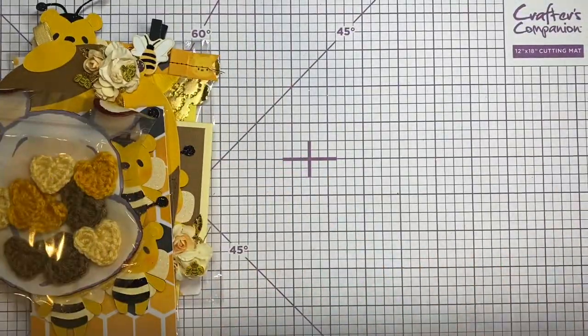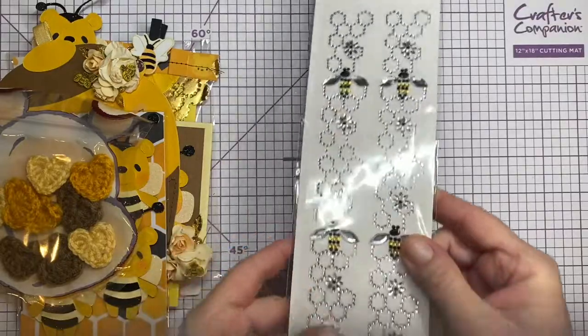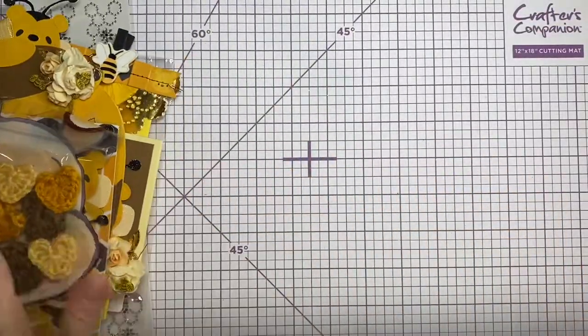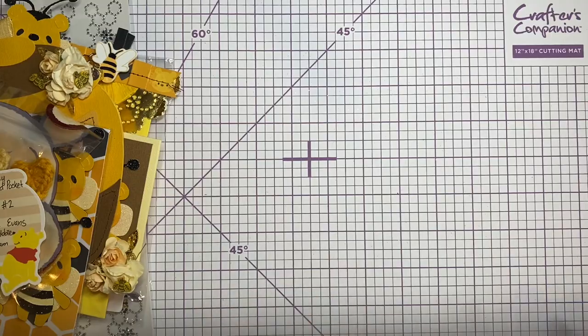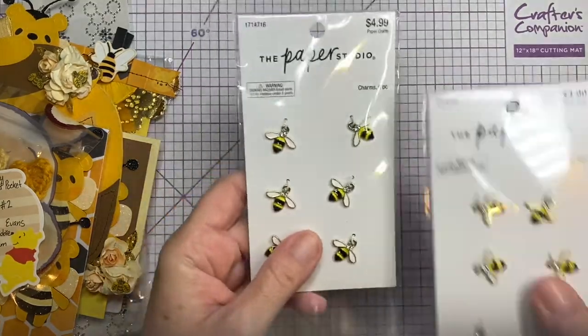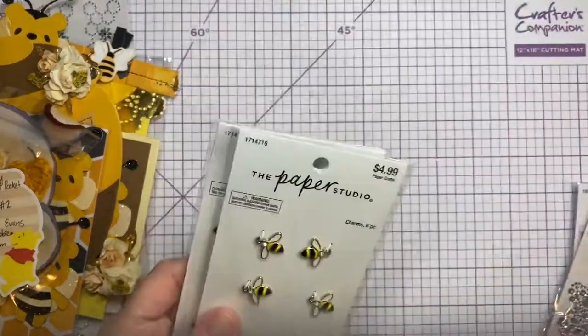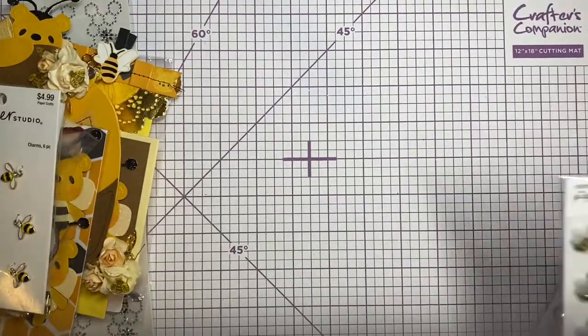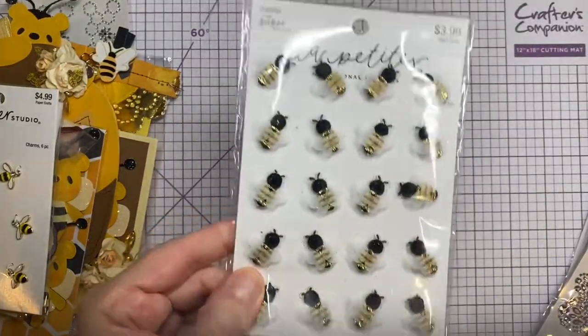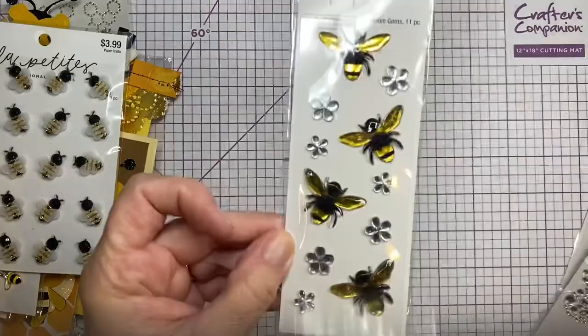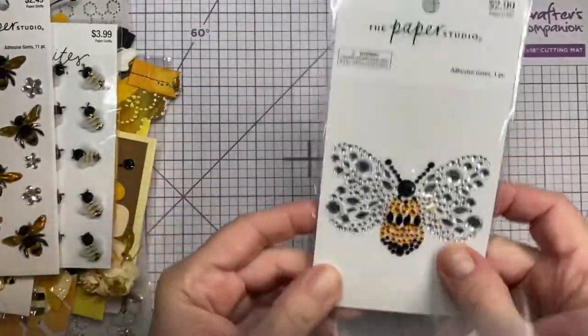So all of that and then this bee bling from Hobby Lobby and then more bee goodies from Hobby Lobby. So I've got two of these. These are charms. Obviously I won't need two. Well it just depends on how much I do I guess right? How many different projects? Stickers. Bling. More bling.